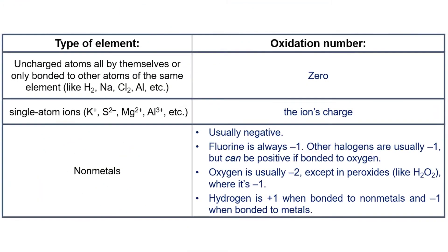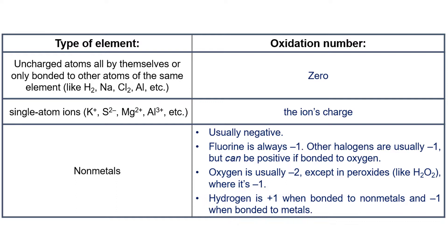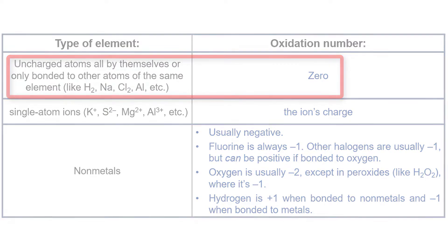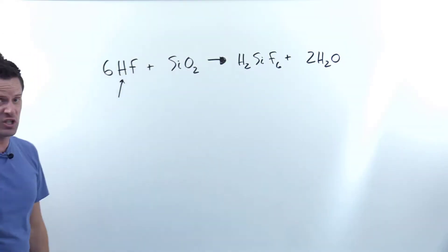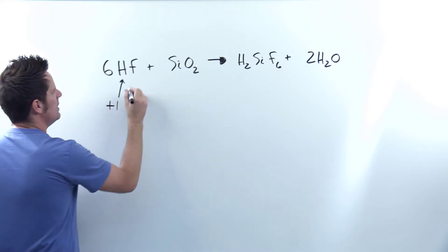According to our oxidation rules, hydrogen always has an oxidation number of +1 if bonded to non-metals, and -1 when bonded to metals. The only exception is hydrogen alone with no charge, as in H₂ with zero charge — then its oxidation number is zero. Here I've got hydrogen bonded to fluorine, which is a non-metal, so hydrogen's oxidation number is +1.